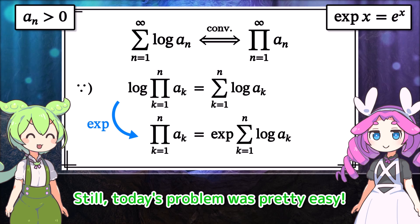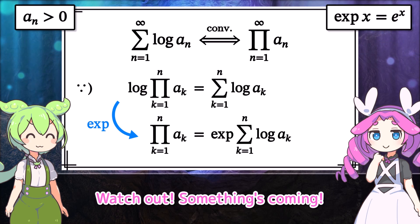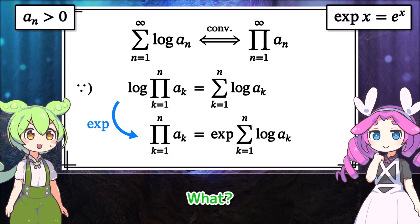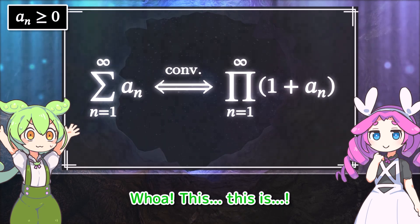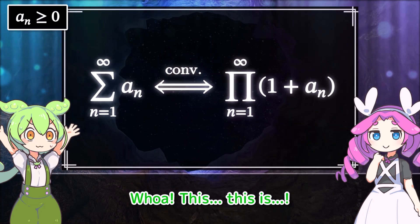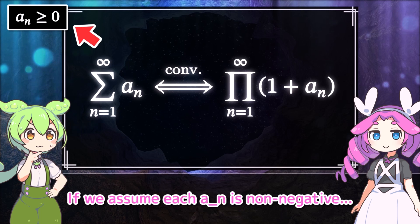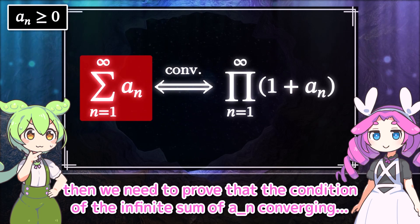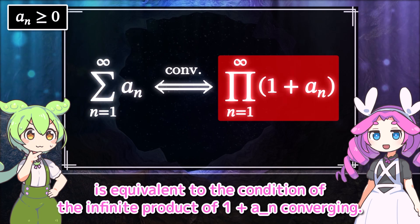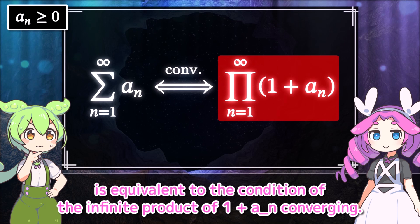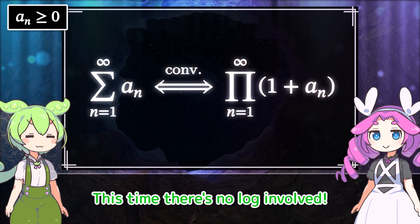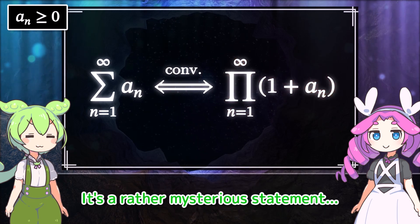Still, today's problem was pretty easy. Watch out! Something's coming. This is the true form of today's problem. If we assume each a_n is non-negative, then we need to prove that the condition of the infinite sum of a_n converging is equivalent to the condition of the infinite product of (1 + a_n) converging. This time there's no log involved. It's a rather mysterious statement.